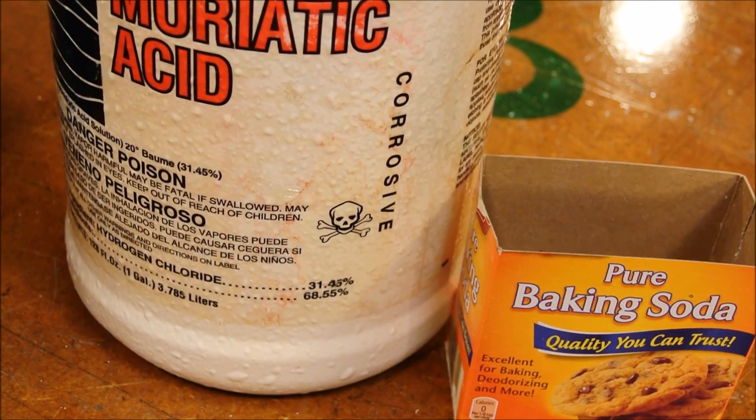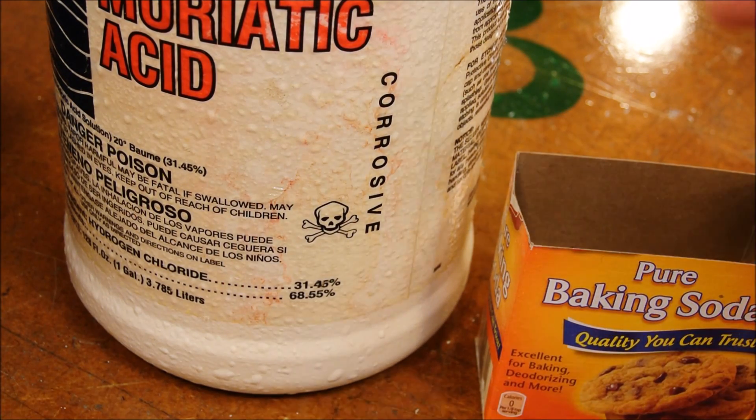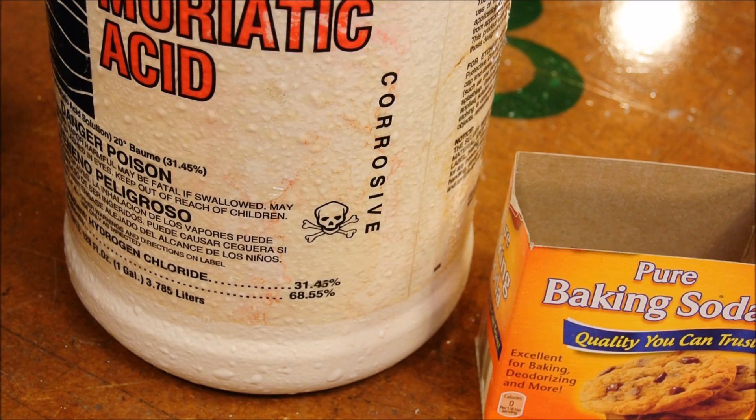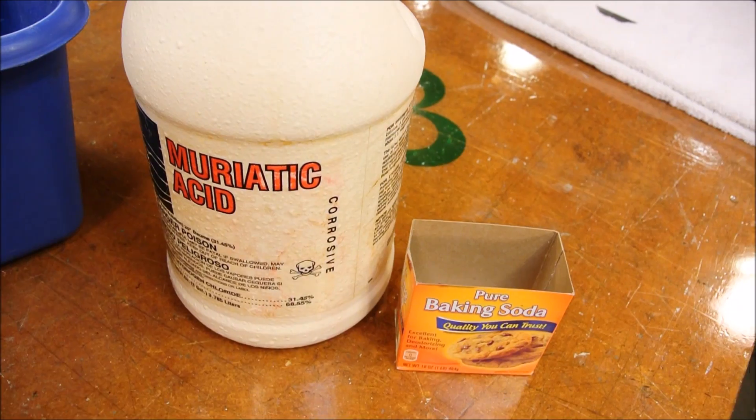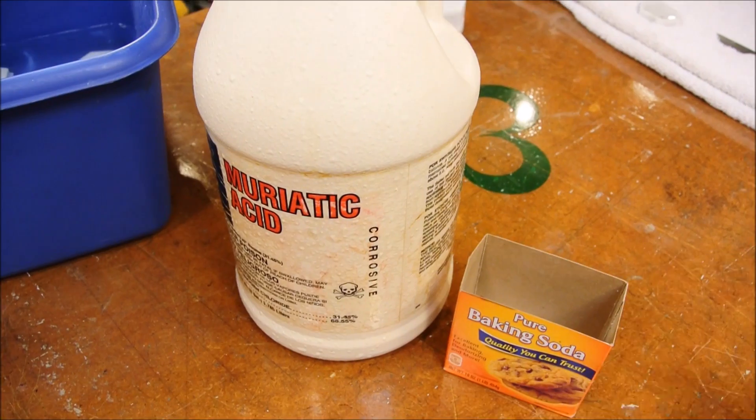Okay, look. Muriatic acid isn't poison, per se. It just has a really low pH. How can I explain this? Once it's neutralized, it turns to salt and water.